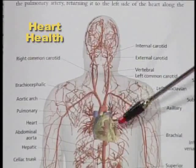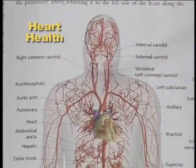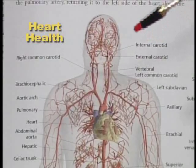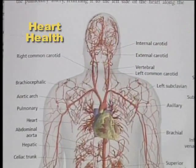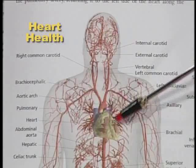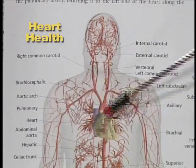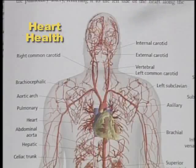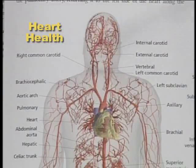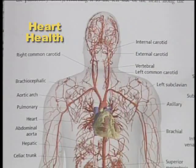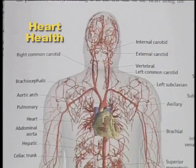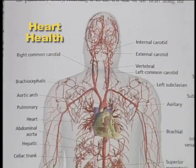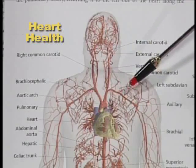Your heart is right in the center of your chest, right behind the bone that connects the ribs. It is protected by those bones. Your lungs are on each side of the heart. The blood actually has to go through the lungs to let off and take in new oxygen — exhaling toxins and then the blood goes back to the heart.